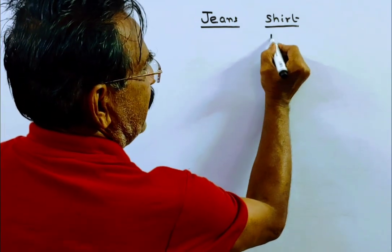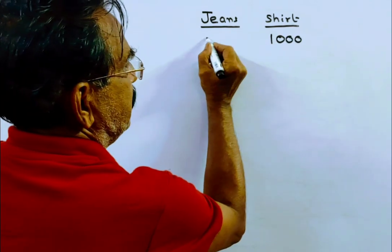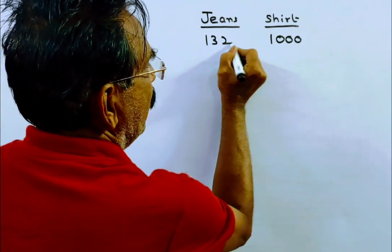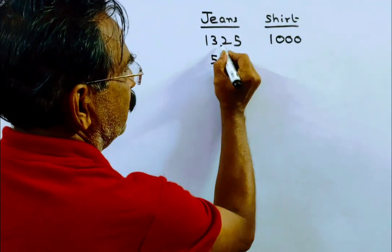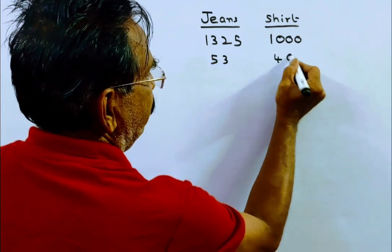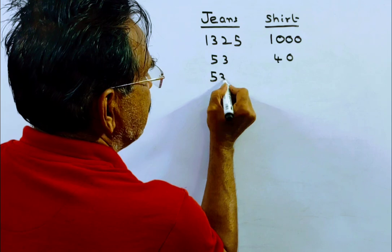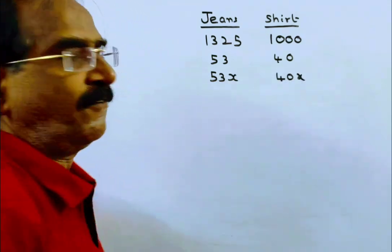If the cost price of the shirt is 1000, then the cost price of the jeans must be 1325. The ratio is 53 to 40. So the cost price of the jeans is 53X and the cost price of the shirt is 40X.